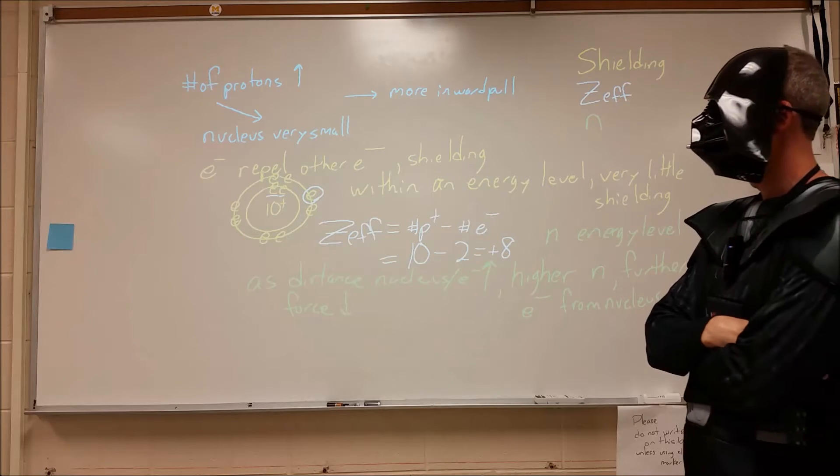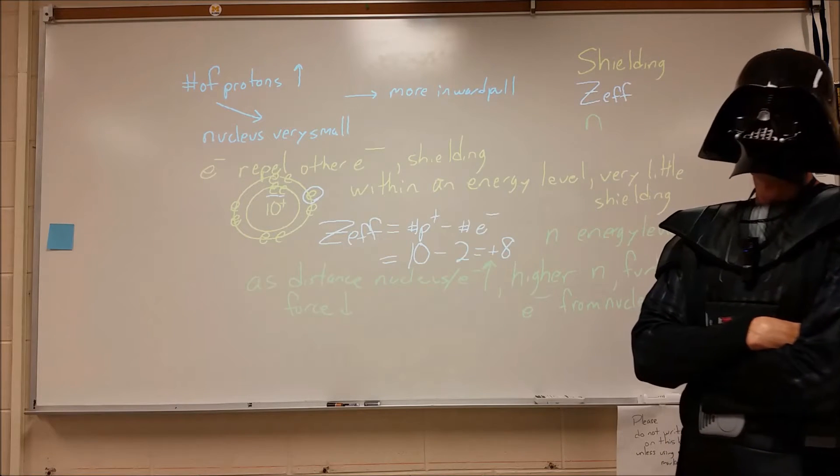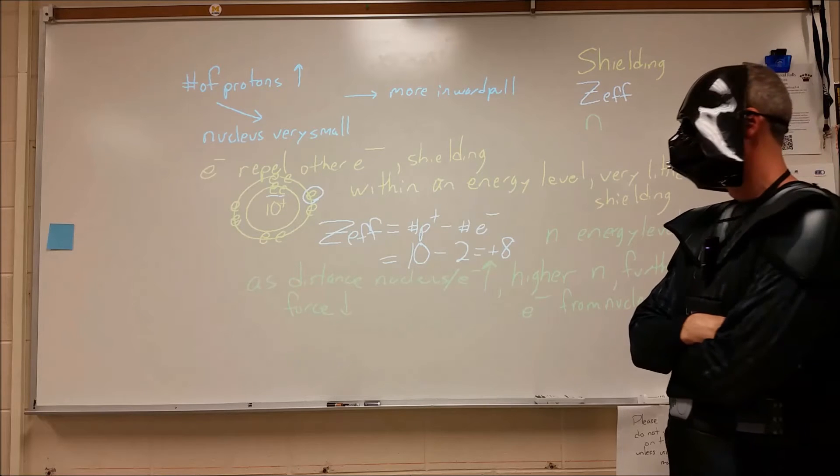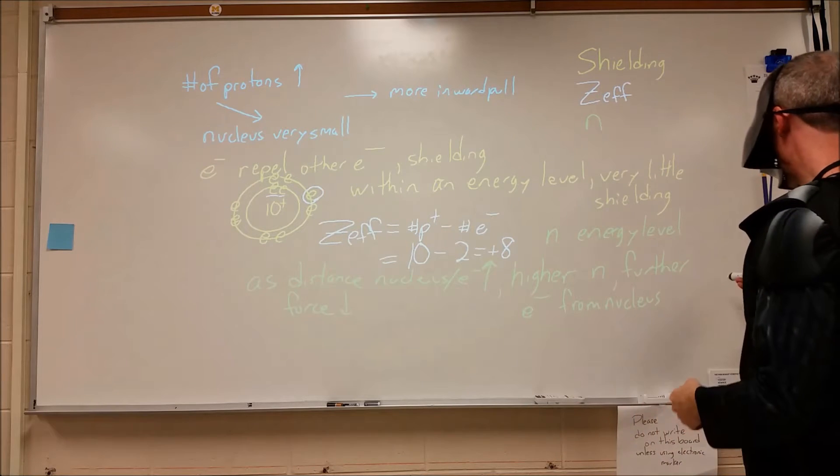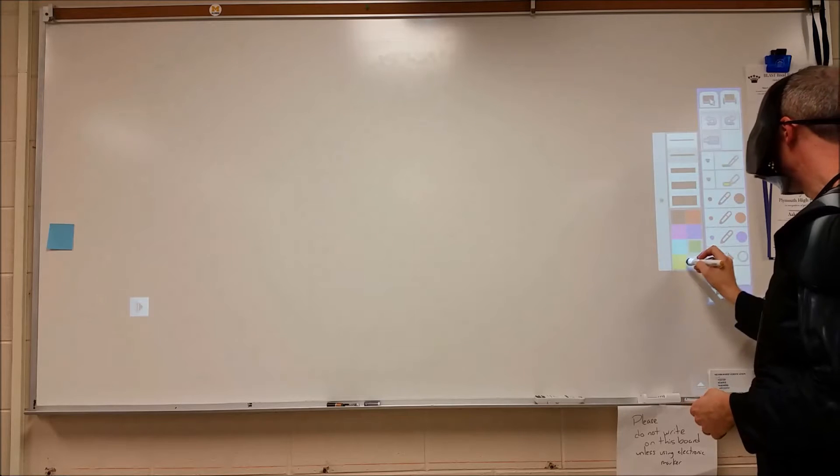So the first periodic trend we're going to go over is atomic radius. How big are atoms? We're going to go through these terms now and apply them to showing why some atoms are bigger than others.